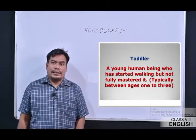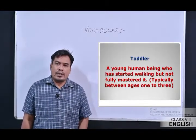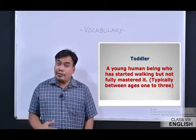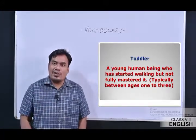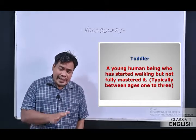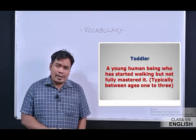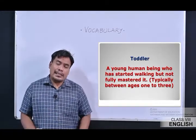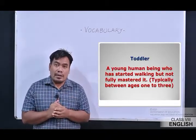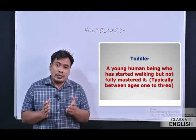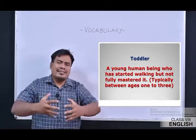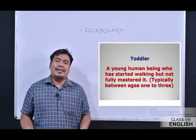The next word is toddler — T-O-D-D-L-E-R. You know the meaning of that? A young human being who has started walking but not fully mastered it. We usually call that particular young human being a child or infant, typically between ages one to three. Those kids who are not able to walk are called toddlers also. Instead of saying kids, infant, or child, you could use this term — toddler. So I hope that you are going to use this word in your sentences — most of you have come across this word, but whenever we are talking and writing, we usually forget all these terms.